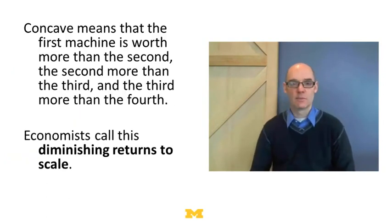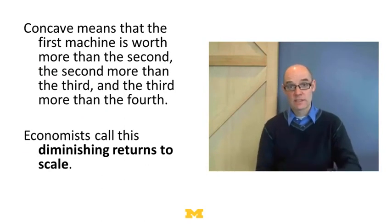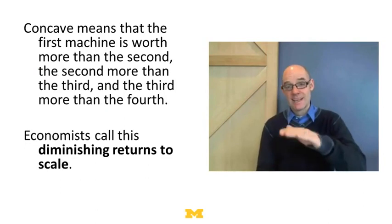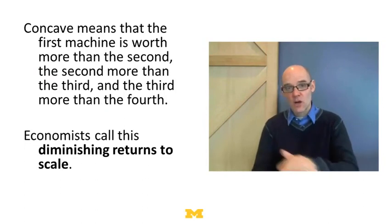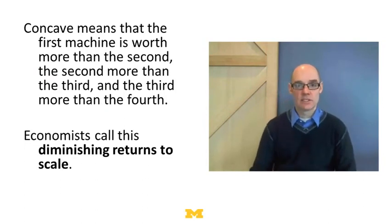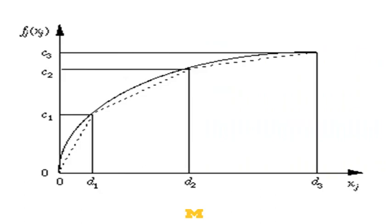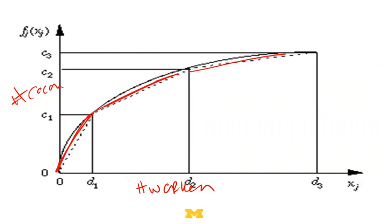Let's step back on that first assumption — concave. Concave means the first worker gives you more coconuts, the second gives you more coconuts but fewer than the first did, so it sort of falls off. Economists call this diminishing returns to scale. Here's a picture: if this is the number of workers and this is the number of coconuts, the first worker gives you quite a bit, the second gives you fewer, and the third gives you even less. So as you add more workers, you get more coconuts, but the workers become less and less valuable. The same is true of machines.